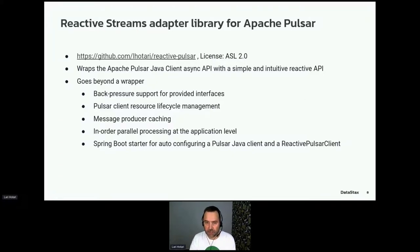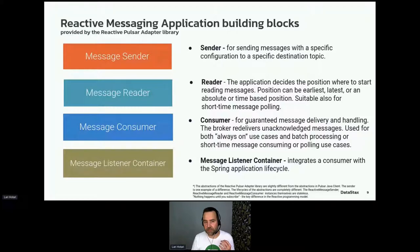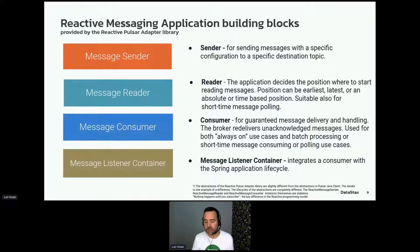For Spring Boot there's a starter for auto-configuring the Pulsar Java client and reactive Pulsar client, so you can get started very quickly — as we'll see in the live coding demonstration. The building blocks this library provides are four component types: a message sender for sending messages with specific configuration to a specific destination topic. The library is an adapter for the Pulsar Java client, using its existing concepts and objects rather than creating separate ones.